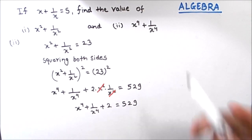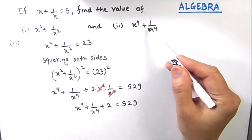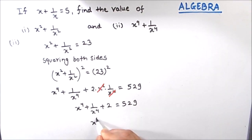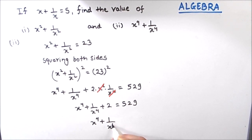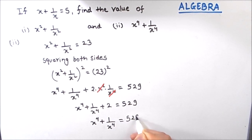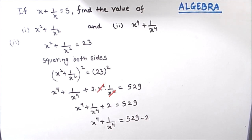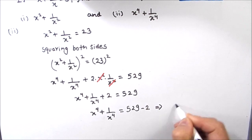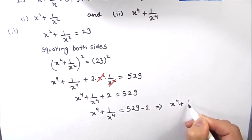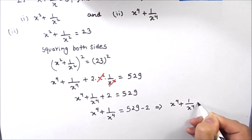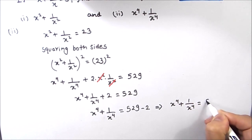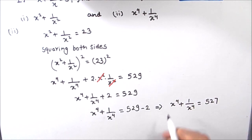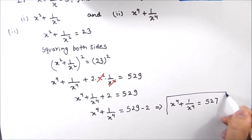Now as we need to find the value of x to the power 4 plus 1 by x to the power 4, we transpose 2 to the right hand side. So we have x to the power 4 plus 1 by x to the power 4 is equal to 529 minus 2, which gives us x to the power 4 plus 1 by x to the power 4 is equal to 527, and this is the value we needed to find.